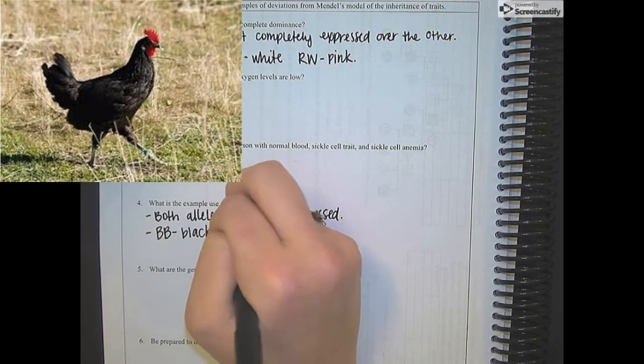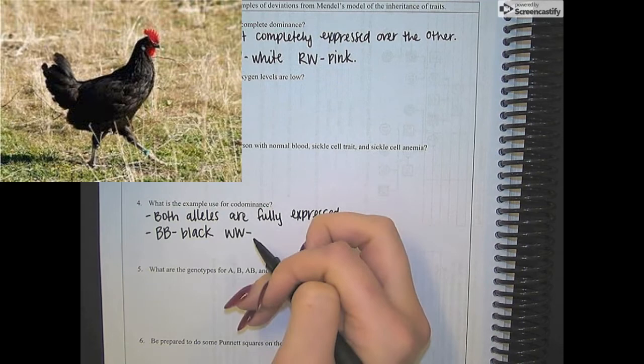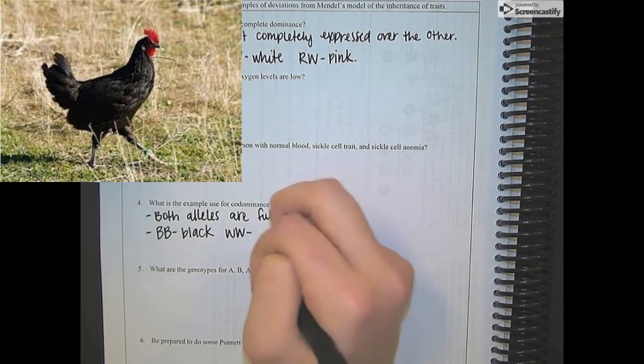If you have two white alleles, so big W, big W, it's going to be white.